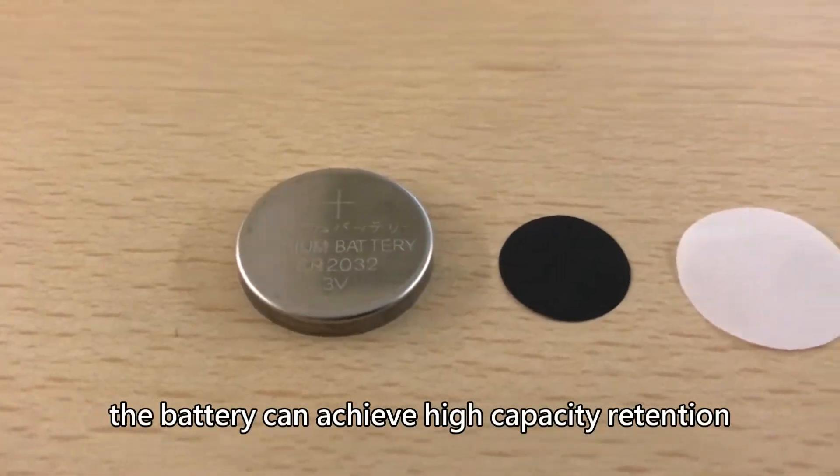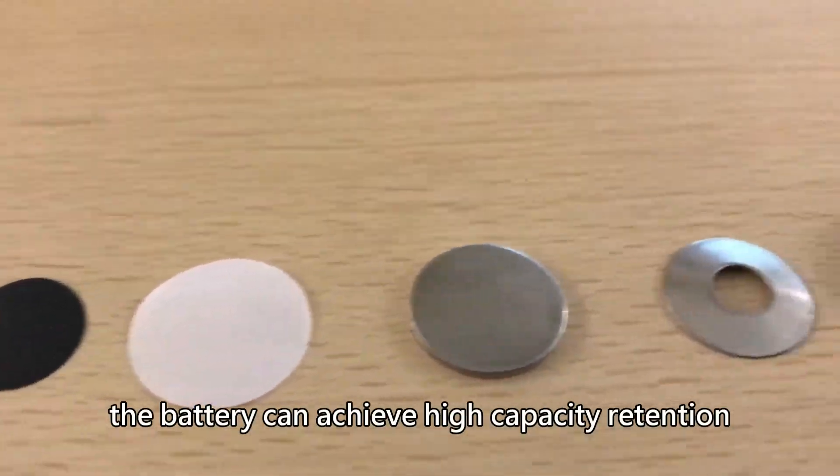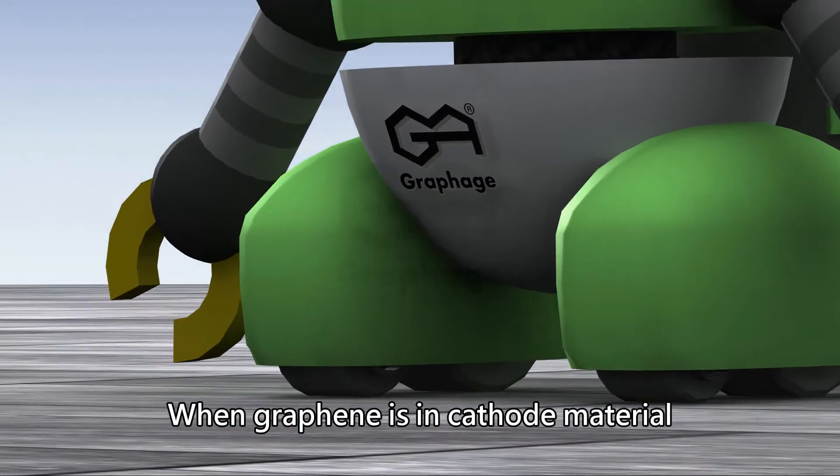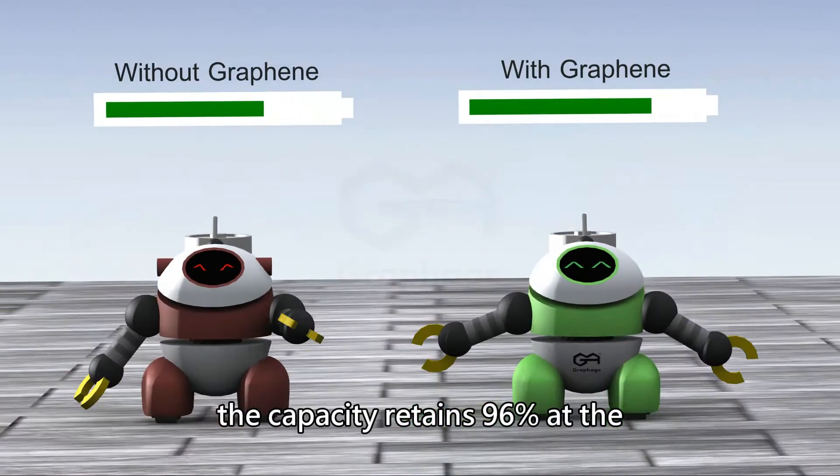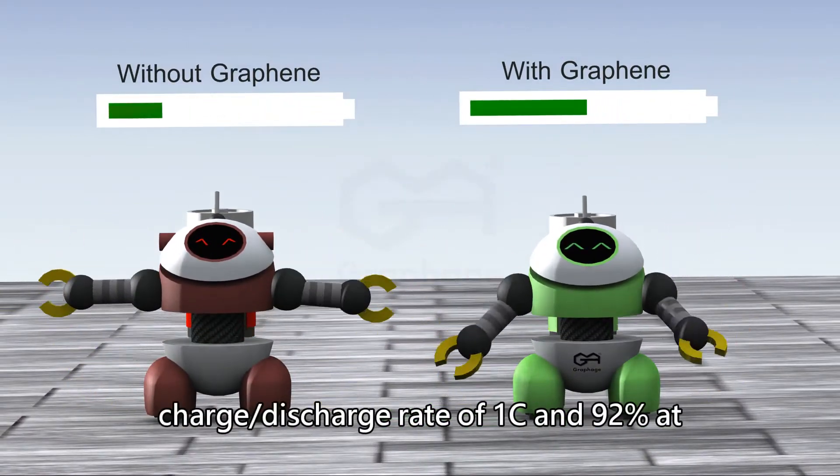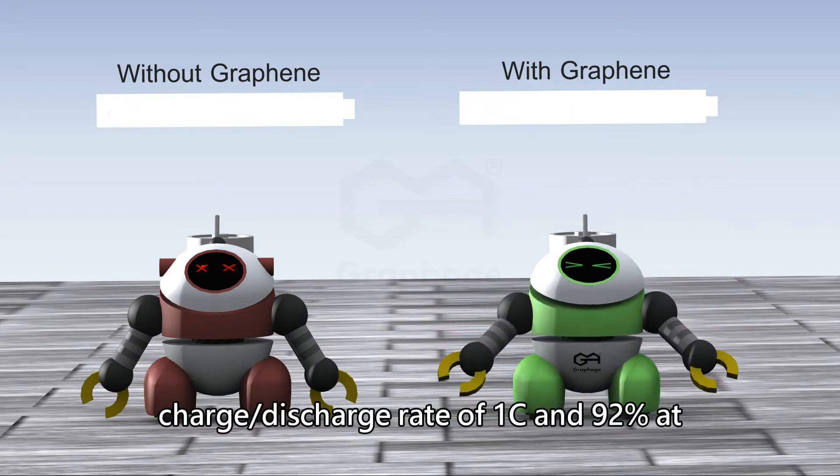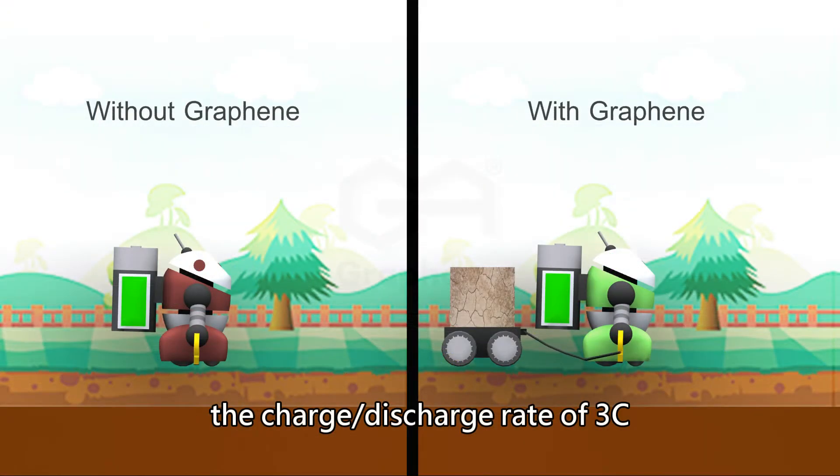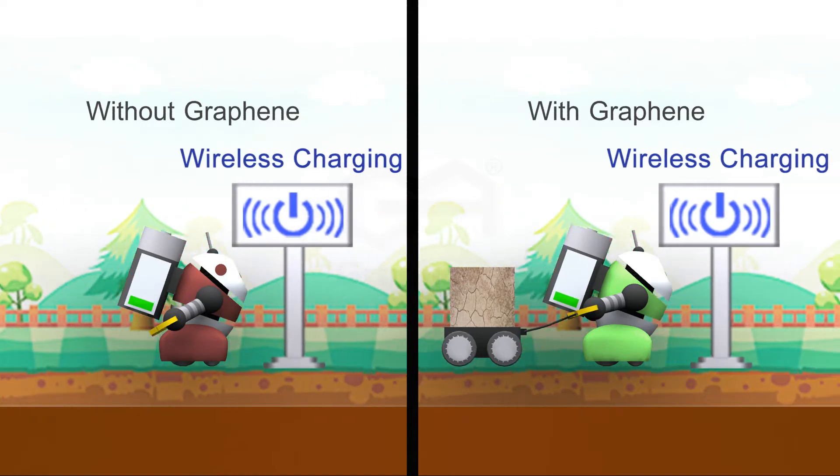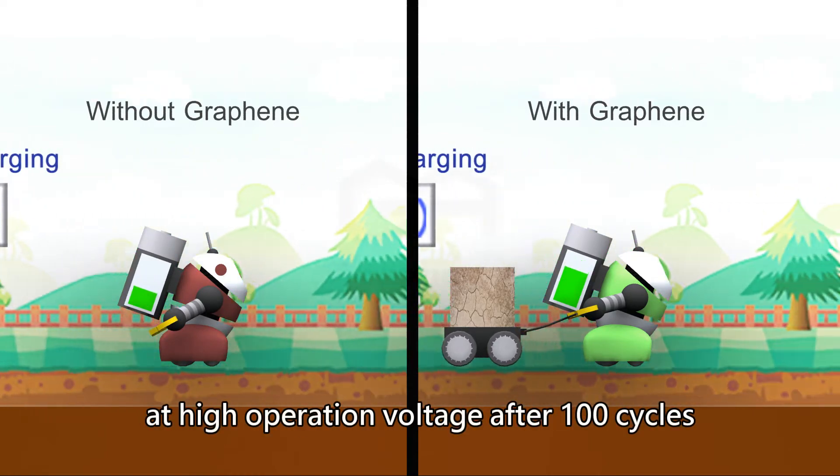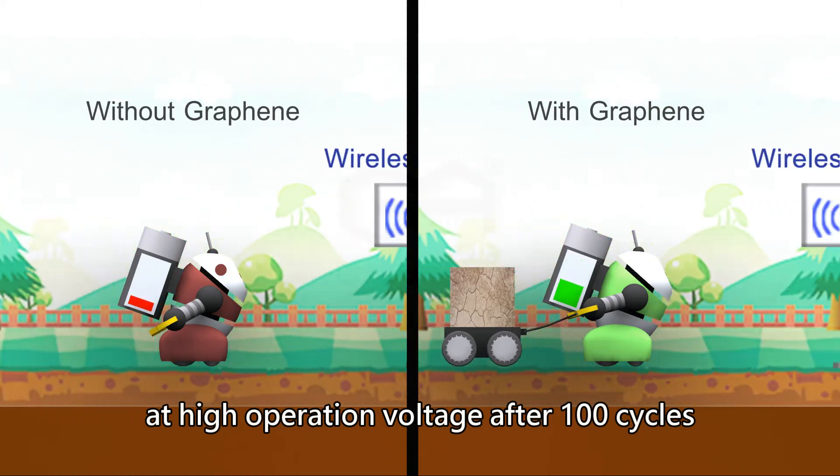Hence, the battery can achieve high capacity retention and a long life cycle. When graphene is in cathode material, the capacity retains 96% at the charge/discharge rate of 1C and 92% at the charge/discharge rate of 3C. The capacity can even remain above 90% at high operation voltage after 100 cycles,